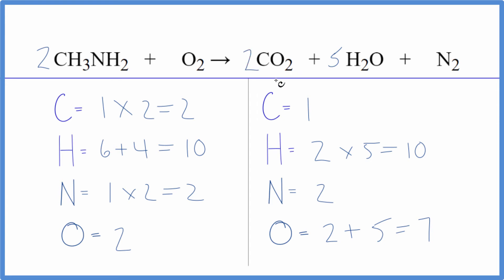Put a two in front of the CO2. One times two that'll give us two of those, so those are balanced. We update the oxygens again. Two times two is four plus five times one that's five, so we have nine.